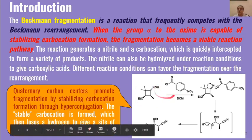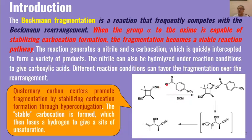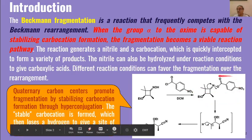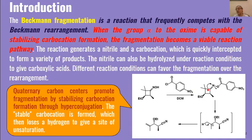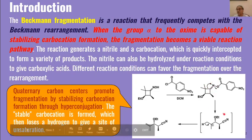When this substrate is reacted with para-nitrobenzoyl chloride, HCl is eliminated and we get the oxime ester intermediate. These intermediates, instead of undergoing Beckmann rearrangement, undergo fragmentation at the carbon-carbon bond. A pair of electrons forms a carbon-nitrogen triple bond, this part is eliminated, and a stable nitrile is formed.